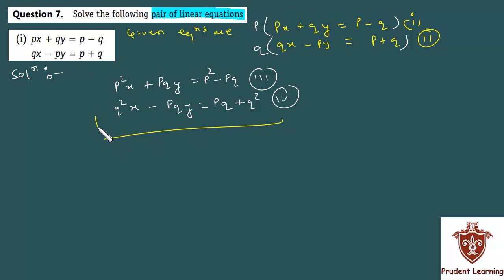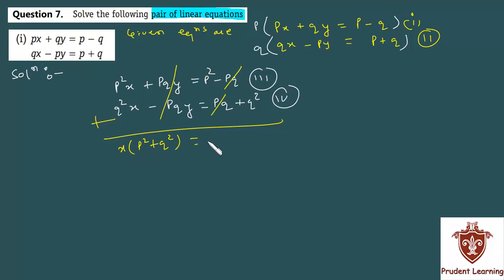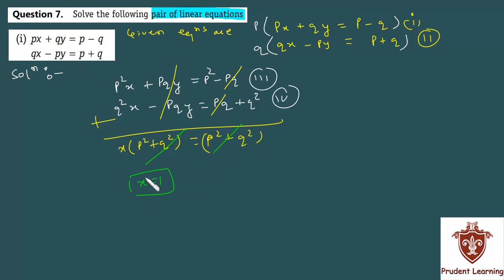Adding the two equations, PQ and minus PQ cancel. We get x common with P squared plus Q squared on the left-hand side, and P squared plus Q squared on the right-hand side. So P squared plus Q squared cancels, and we get x equal to 1.